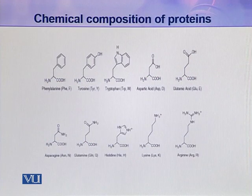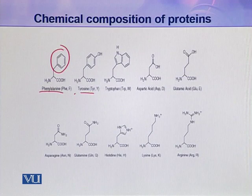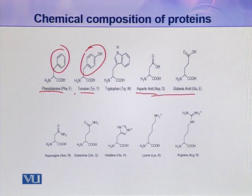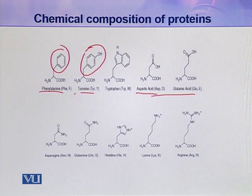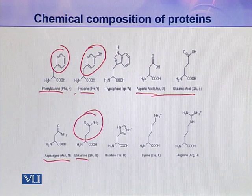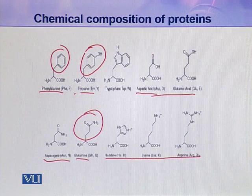Then there are phenylalanine, which contains a phenyl group, and tyrosine, which is similar. Then tryptophan, aspartic acid, and glutamic acid — aspartic acid and glutamic acid are negatively charged amino acids. Then asparagine and glutamine, where glutamine has quite a large R group. Then histidine, lysine, and arginine — all three of these are also charged amino acids, but they are positively charged.